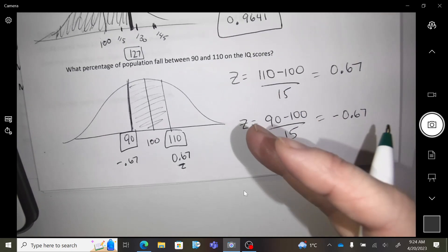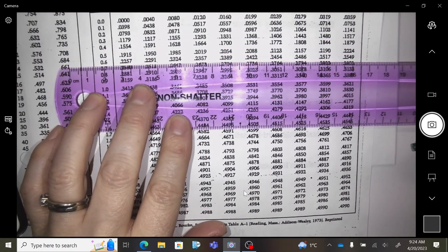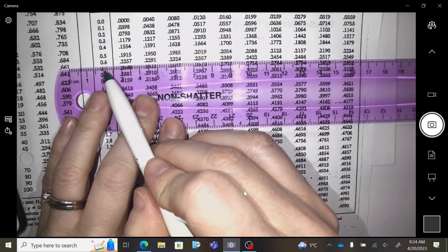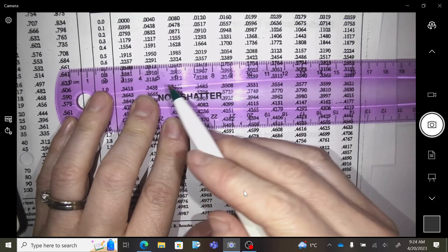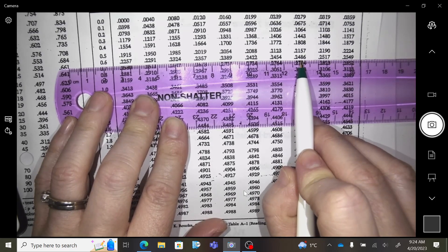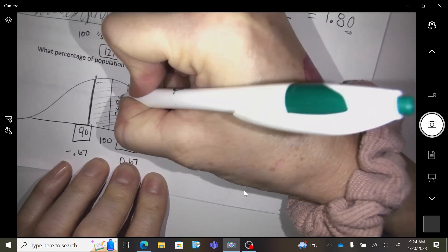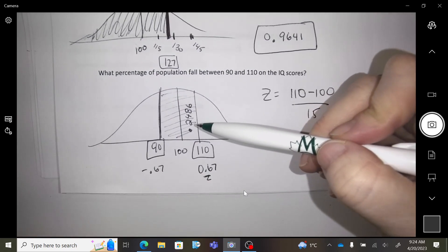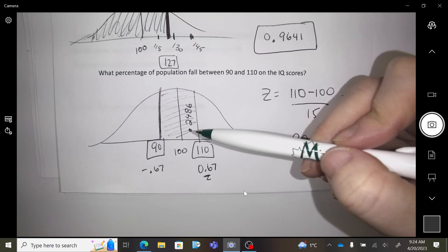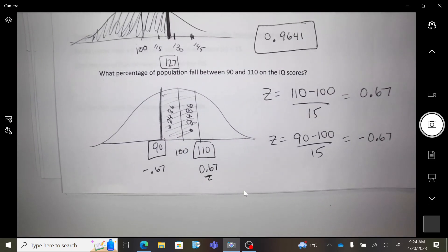Okay, so this chart, you're going to look up 0.67. So I'm going to go to this line that says 0.6, and then I have to go all the way across to the seven. Did you find 0.2486? So what does that tell me? It tells me that there's 24.86% of the data in between me and the average.